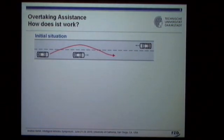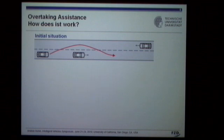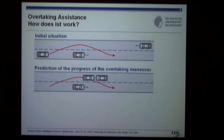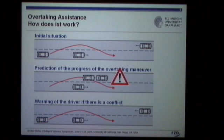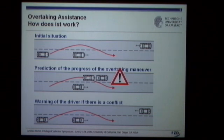How does the system actually work? On top of that slide we see a typical initial situation of an overtaking maneuver: one car following another, with oncoming traffic making the situation potentially dangerous. If the driver is about to start an overtaking maneuver, the system makes a prediction about the further progress of that situation and can also detect possible conflict situations with oncoming traffic. If such a conflict situation is detected, the system gives a warning to the driver at a very early stage of the overtaking maneuver, so the driver can terminate the maneuver and the potentially dangerous situation is avoided in a safe way.